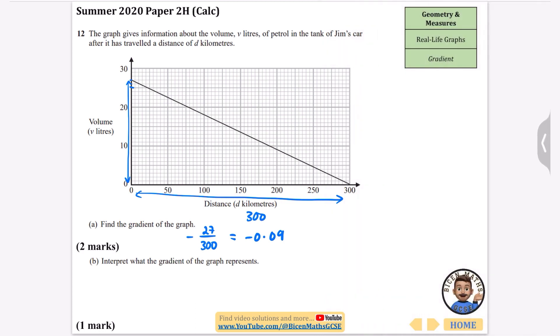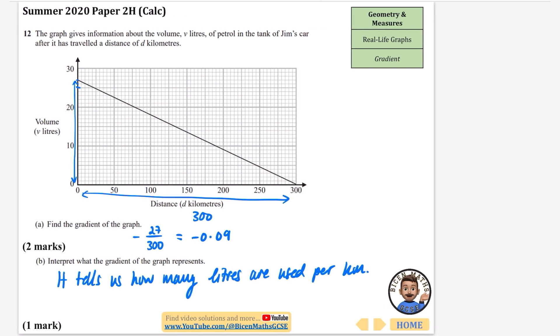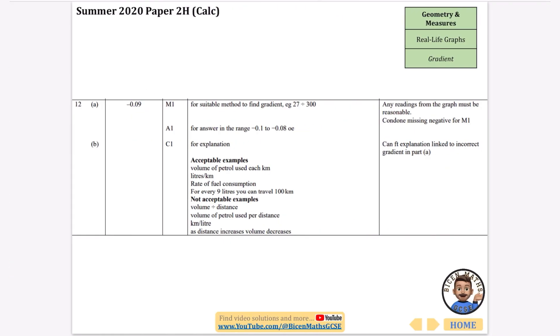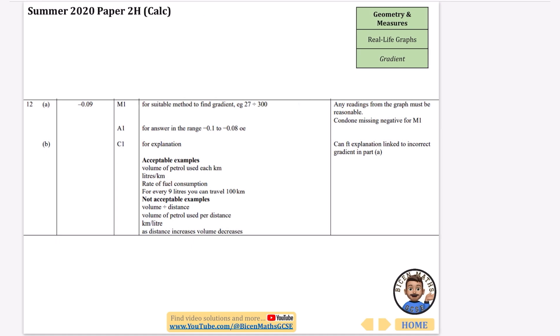It says interpret what the gradient of this graph represents. It's telling us how the liters are changing per kilometer. The gradient tells us how many liters are used per kilometer. They accept loads of different things for this: the volume of petrol used each kilometer, the rate of fuel consumption, for every 9 liters you can travel 100 kilometers. They don't accept kilometers per liter or volume of petrol used per distance—you have to make sure it's one of those acceptable ones.